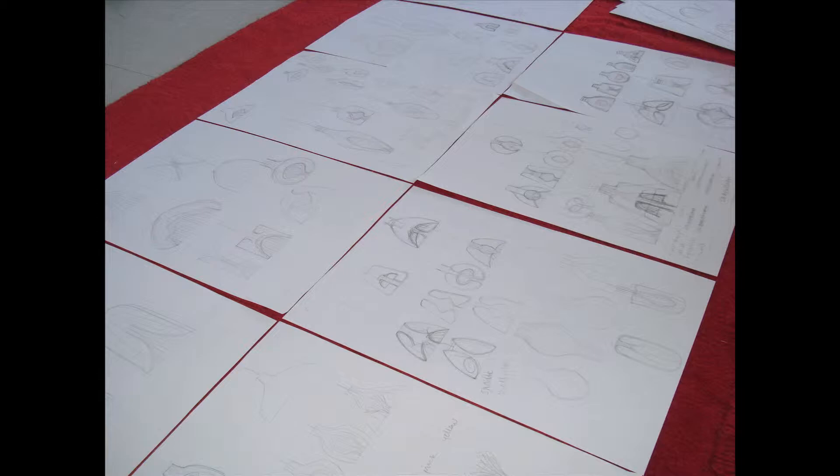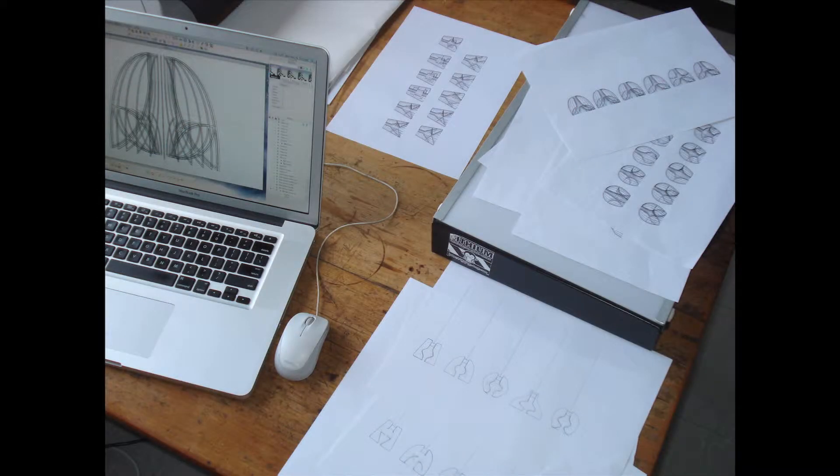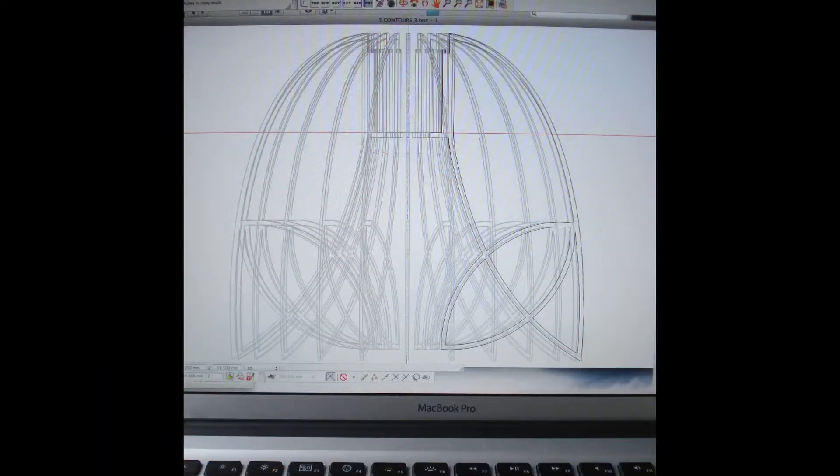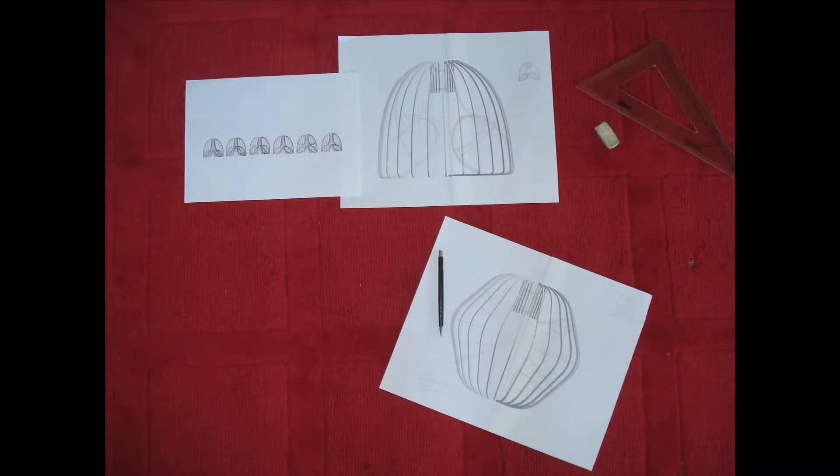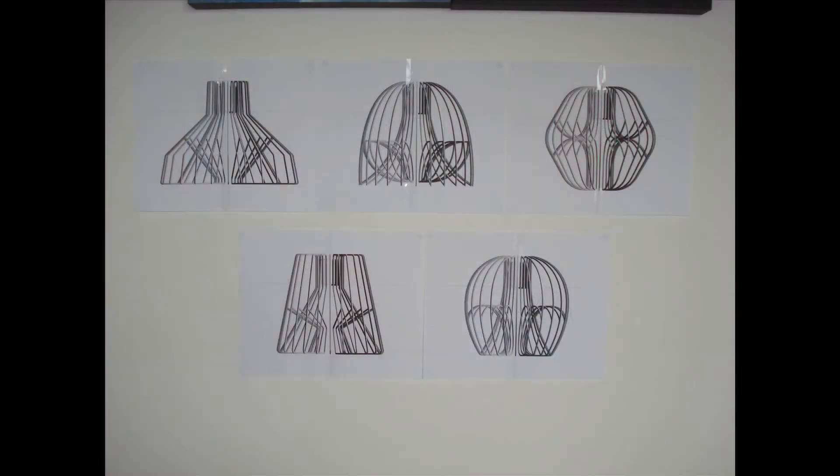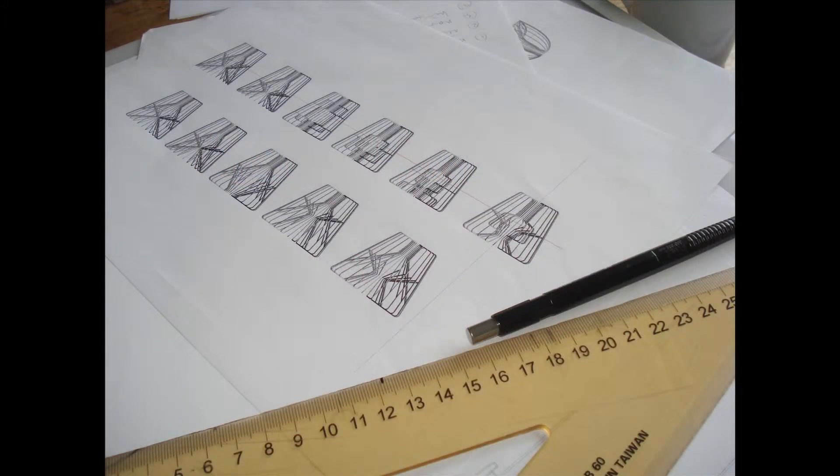For my design process I generally start with hand-drawn sketches which I then transfer to CAD drawings, and those CAD drawings for this series of lights were then sent to a laser cutter to get those drawings turned into laser-cut stainless steel.